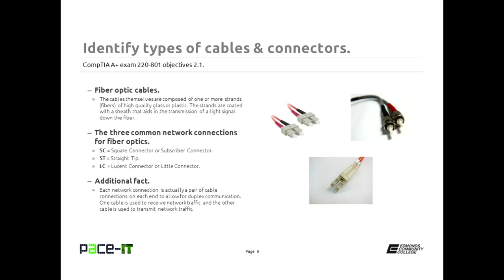Fiber optic cables have four main types. There is the SC, the square connector or subscriber connector, easily identified by the square form of the tip. Then there is the straight tip, also called the stick and twist — it looks like a BNC connector where you stick it in and twist it to lock it in place. The third type is the LC or loosened connector, fairly similar to the SC but smaller in size.